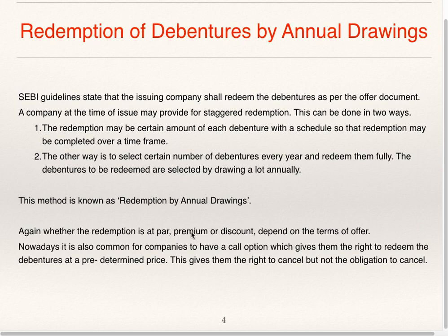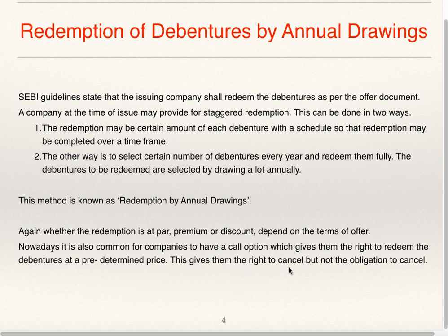Whether the redemption is at par, at premium, or at discount depends upon the terms of the offer. Nowadays it is also common for companies to have a call option, which gives them the right to redeem debentures at a predetermined price. We have seen put and call option — call option gives the company the option or right to redeem the debentures at a predetermined price. This gives them the right to cancel but not the obligation to cancel.